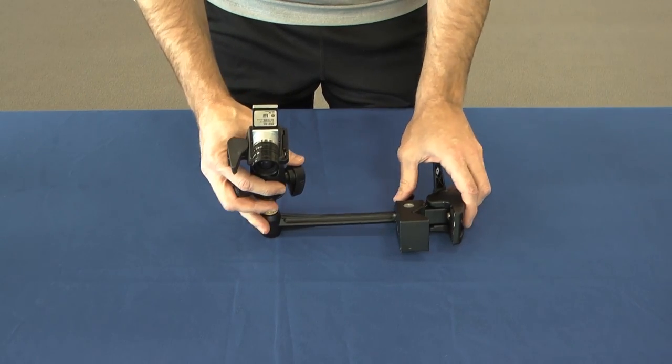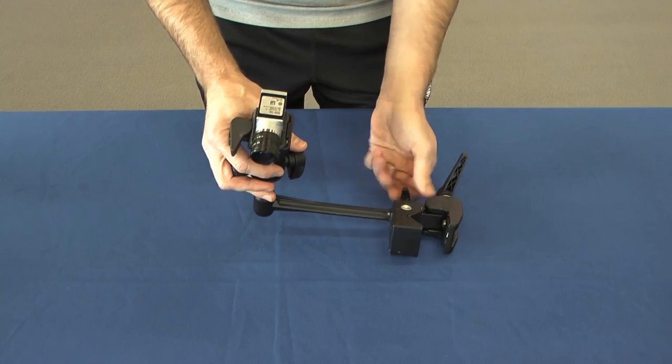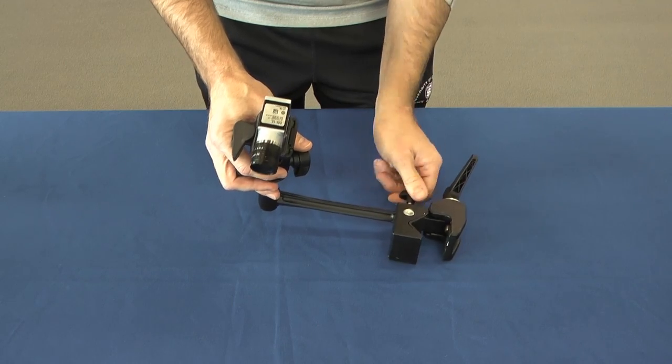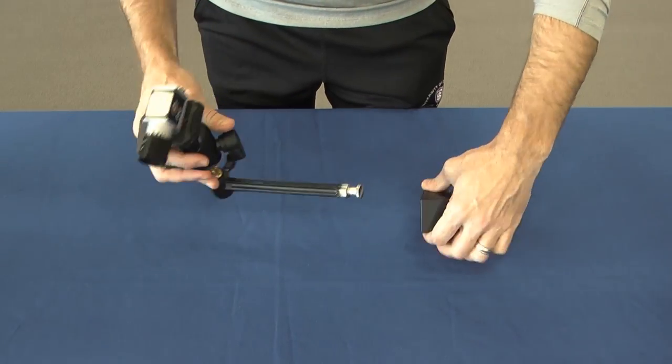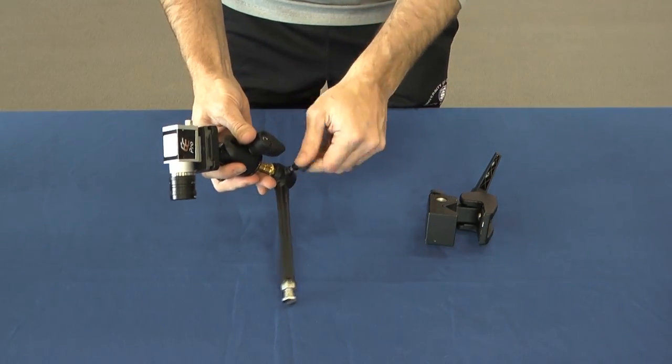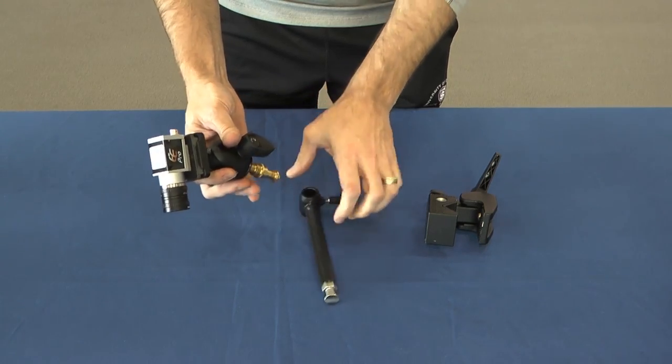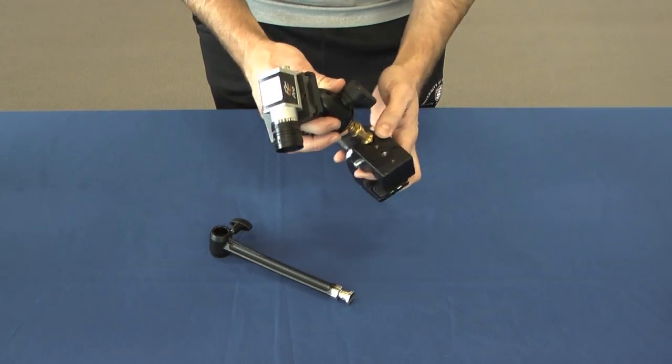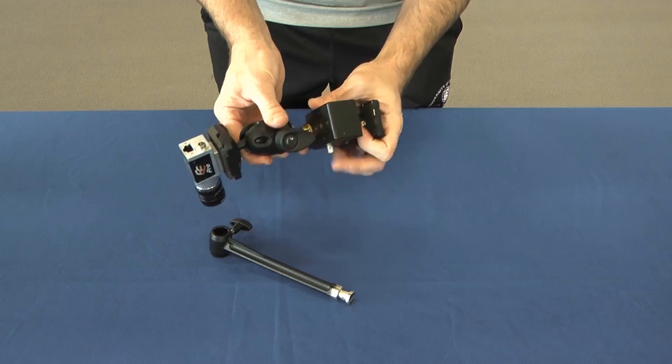You can also choose to not use the extension arm and remove it and instead mount the ball head directly to the clamp itself.